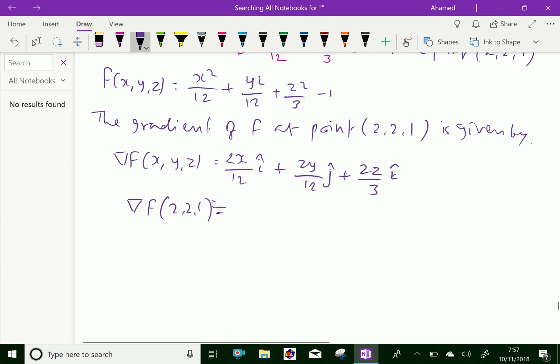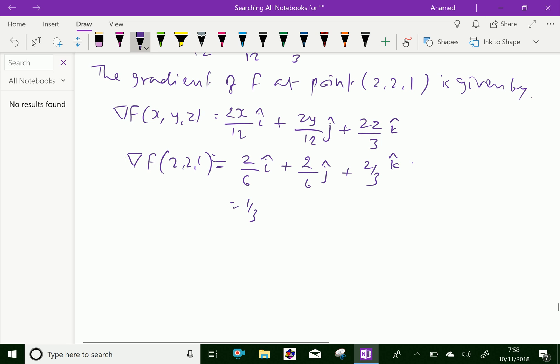That is 2/6 i plus y value also 2, that is 2/6 j plus 2/3, z is 1, that is k, which is further equal 1/3 i + 1/3 j + 2/3 k.